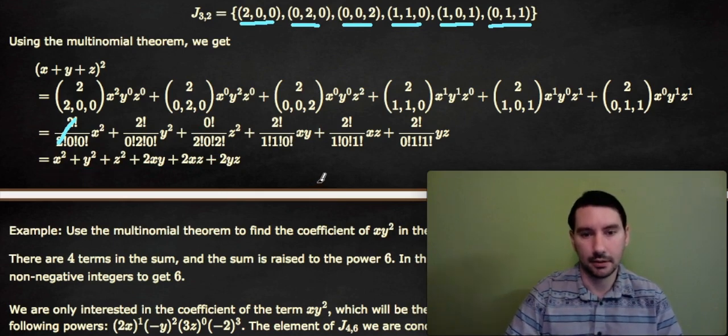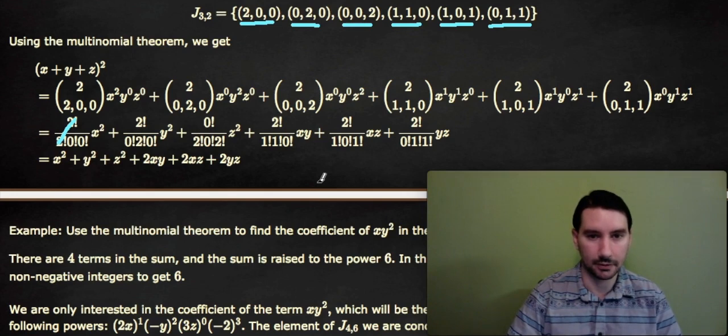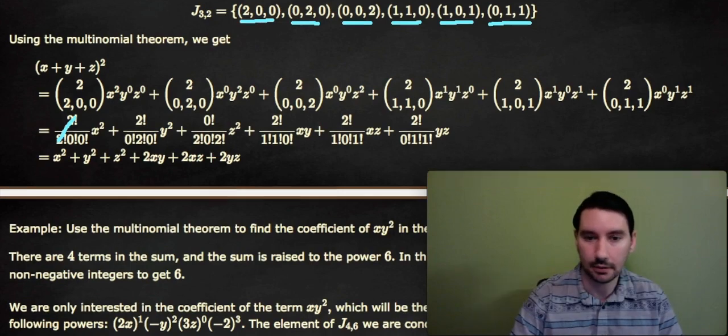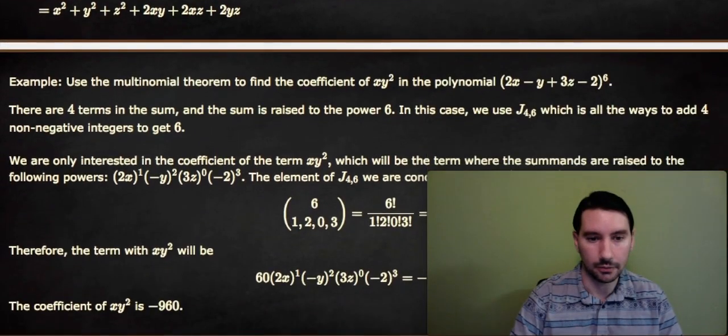So (x + y + z)² isn't so hard to compute. And you might think this is a lot of hoops to jump through just to get x² + y² + z² + 2xy + 2xz + 2yz. So let's look at another example where this might be more useful to apply.